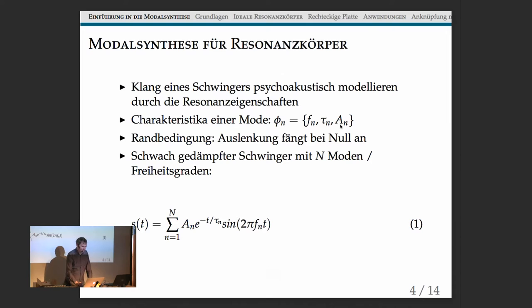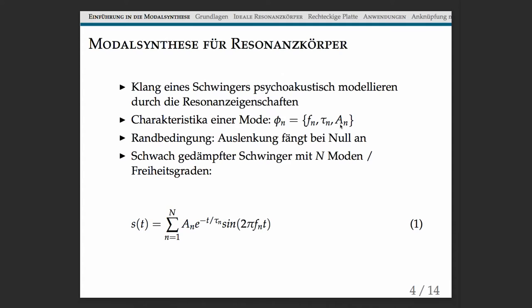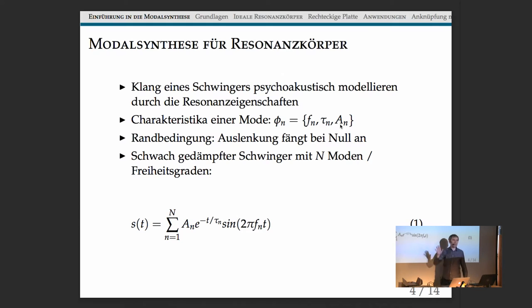In SynthoModeler, using the resonators object, it makes a certain assumption: basically the system that you're modeling starts from a zero displacement. It starts with an initial velocity, but the initial displacement is zero. That means the sound is described as a summation of exponentially decaying sinusoids. If you have different boundary conditions, then you would also have some decaying cosine terms here.